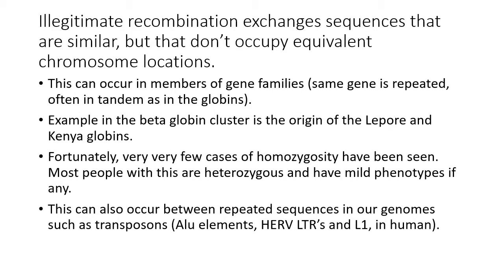We're going to talk about different examples of this because it can occur in different situations. The first two examples will have to do with gene families, like the globins, where the same gene or a very similar one is repeated, often in tandem. There's also the issue of repeated elements, such as Alu elements and endogenous retroviruses, which are similar to each other in sequence and can also undergo exchange, causing problems too.